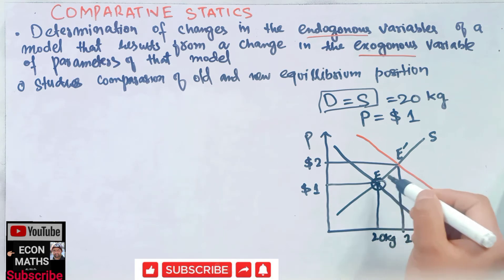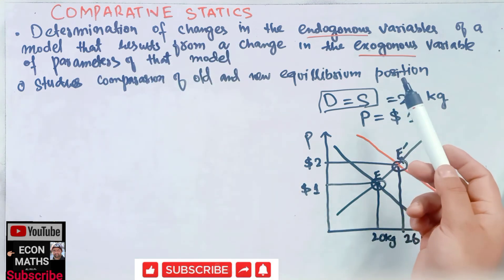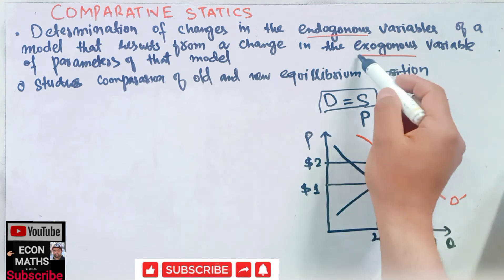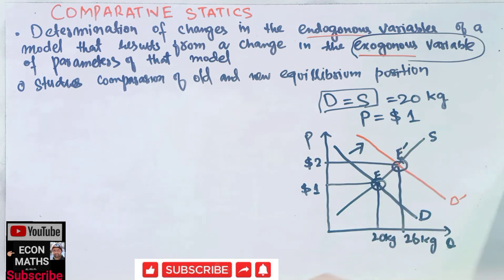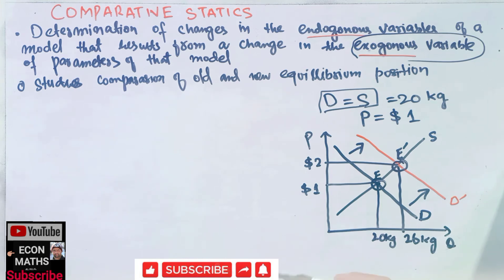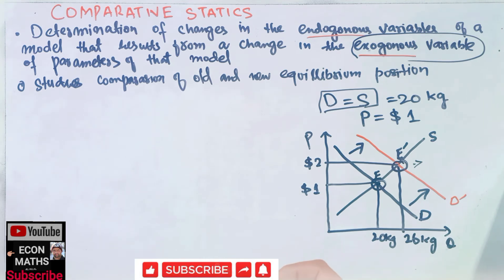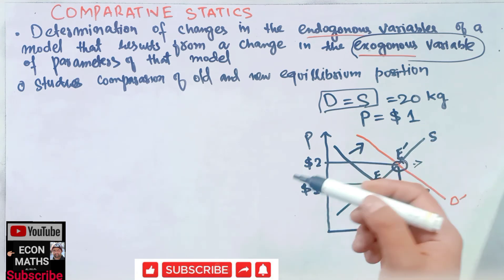So what we see is that comparative statics is the study of the old equilibrium price and the new equilibrium price. As we said, it is the determination of the change in endogenous variables resulting from exogenous variables or parameters. The shift in demand was caused by some exogenous factors, so we use comparative statics to compare the two equilibrium positions — before and after the change.